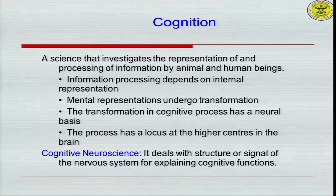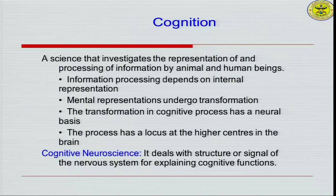The whole transformation with a neural backdrop is done at the highest center of the brain. Therefore, cognition has great relevance with the brain sciences, which we term as cognitive neuroscience. Under cognitive neuroscience, we talk about the structure and signal of the nervous system for explaining any cognitive function — any kind of information processing at the neural level — how it is represented, transformed, and retrieved. The questions under cognitive science are basically about information processing capability.